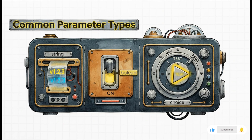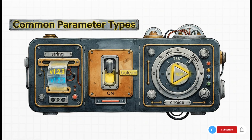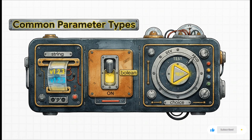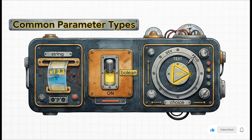We can also make our pipelines interactive. We can define parameters that Jenkins will ask for when someone clicks Build. The common ones you'll use all the time: 'string' — a text box, perfect for a version number; 'boolean' — a simple checkbox for a yes/no option; and 'choice' — which creates a dropdown list. This is awesome for things like letting a user pick which deployment environment they want to target, like staging or production.